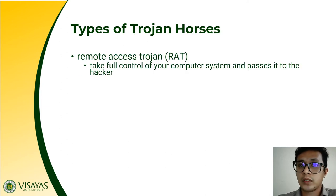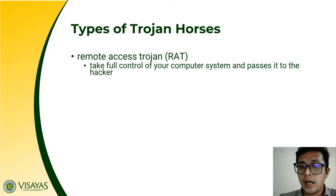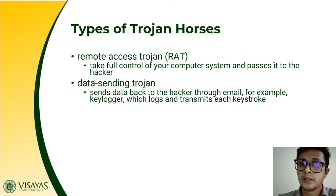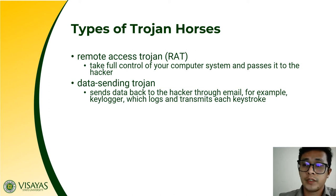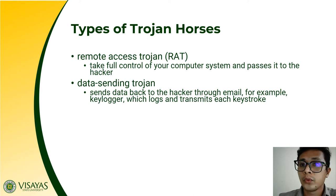There are different types of Trojans. Firstly, you have your Remote Access Trojans. It is called remote access because it allows the attacker to log in or connect to your computer system remotely. It takes full control of your computer system and passes it to the hacker. Once the attacker or hacker has access to your computer system, they can do whatever they want — delete files, format your computer, or send emails using your computer. The main purpose is for the attacker to gain full control of your computer system and its resources.